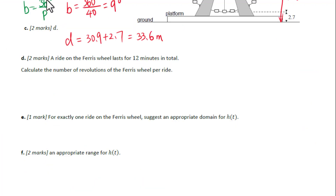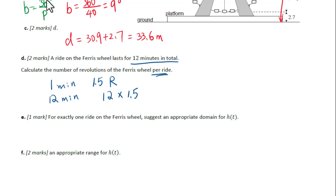A ride on the ferris wheel lasts for 12 minutes in total. Calculate the number of revolutions of the ferris wheel per ride. We know 1 minute gives 1.5 revolutions of the ferris wheel. So 12 minutes gives 12 times 1.5 revolutions, that is 18 revolutions.